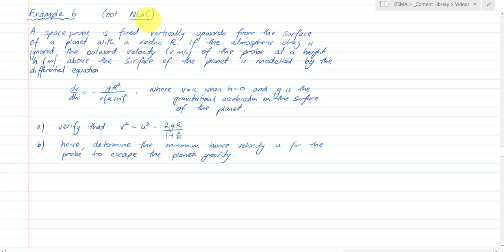A space probe is fired vertically up from the surface of a planet with radius r. If the atmospheric drag is ignored, the outward velocity v of the probe at a height h above the surface of the planet is modeled by this differential equation where v0 equals u when h equals 0 and g is equal to the gravitational acceleration at the surface of the planet.